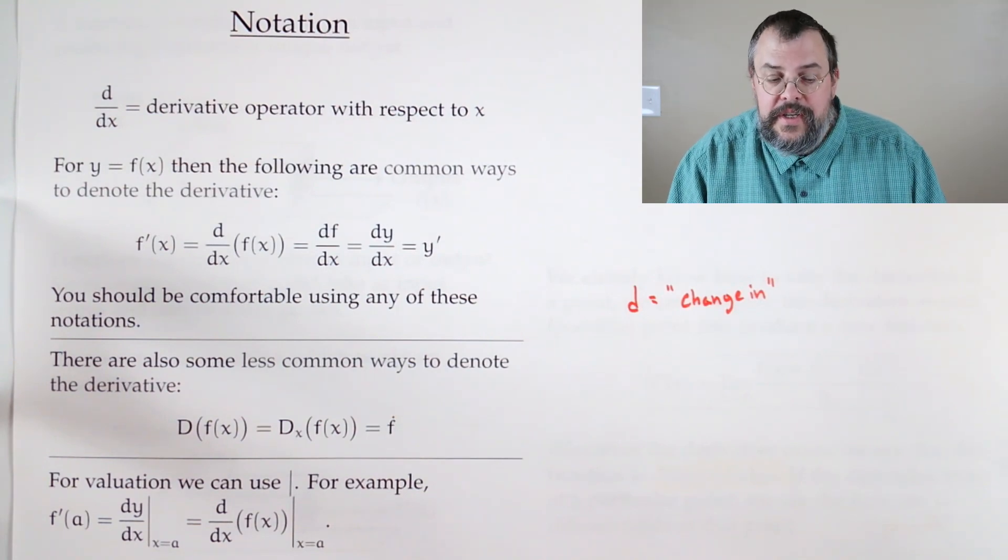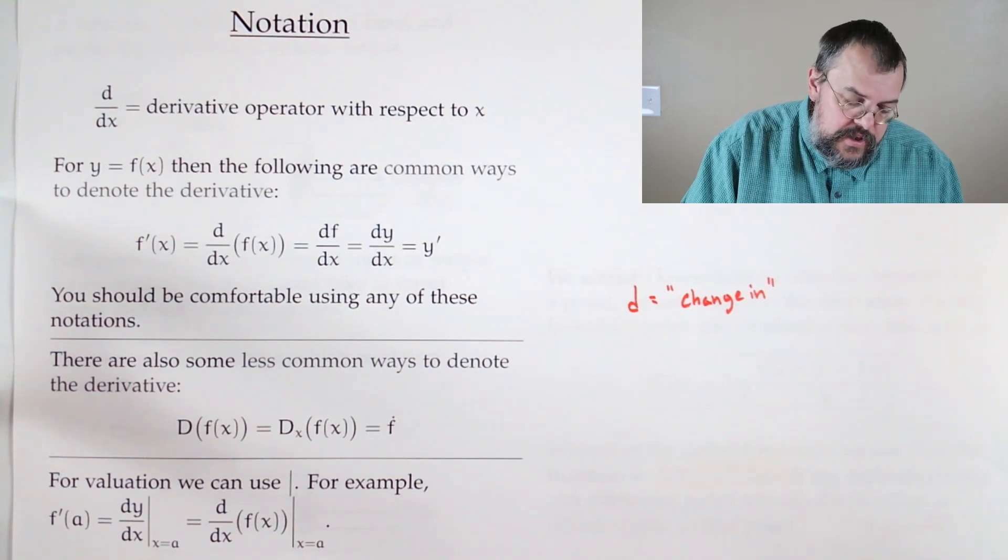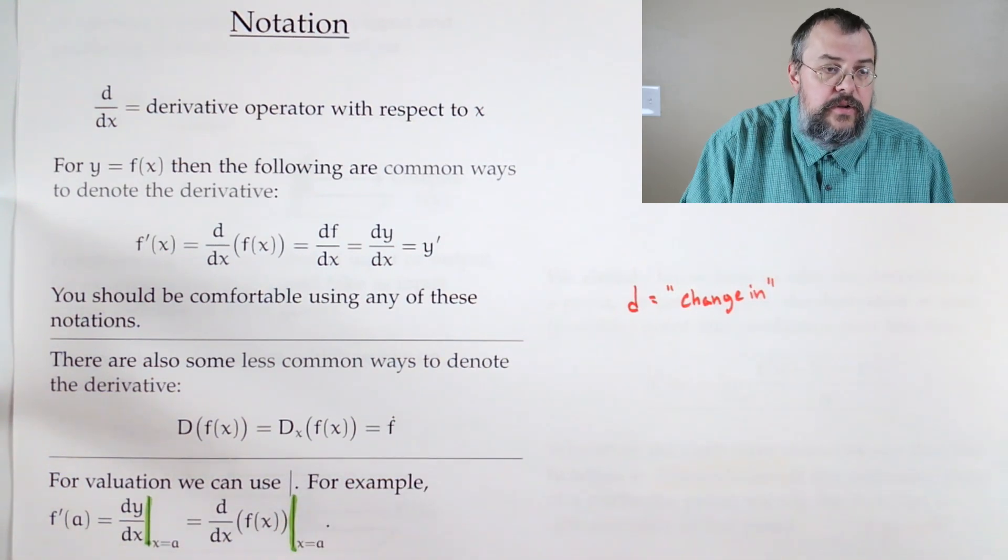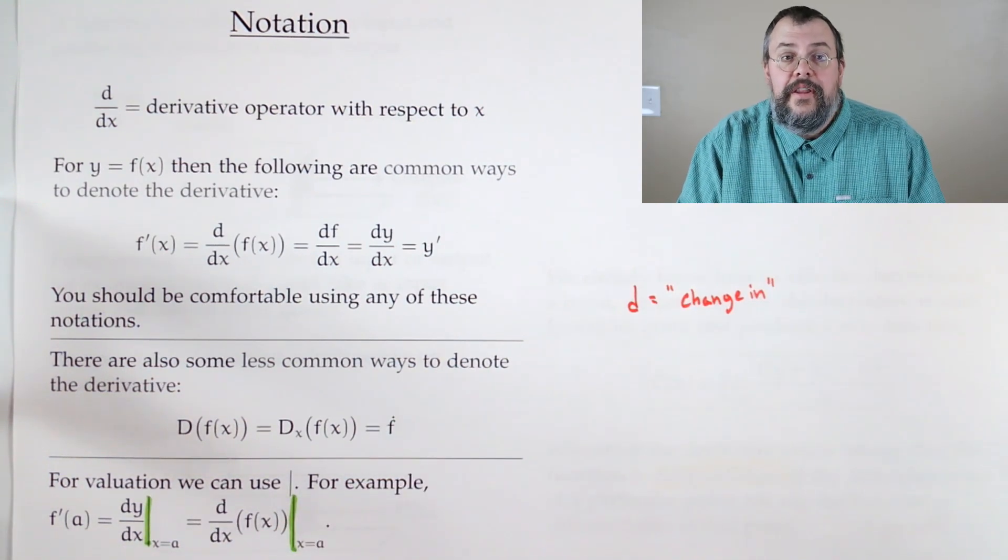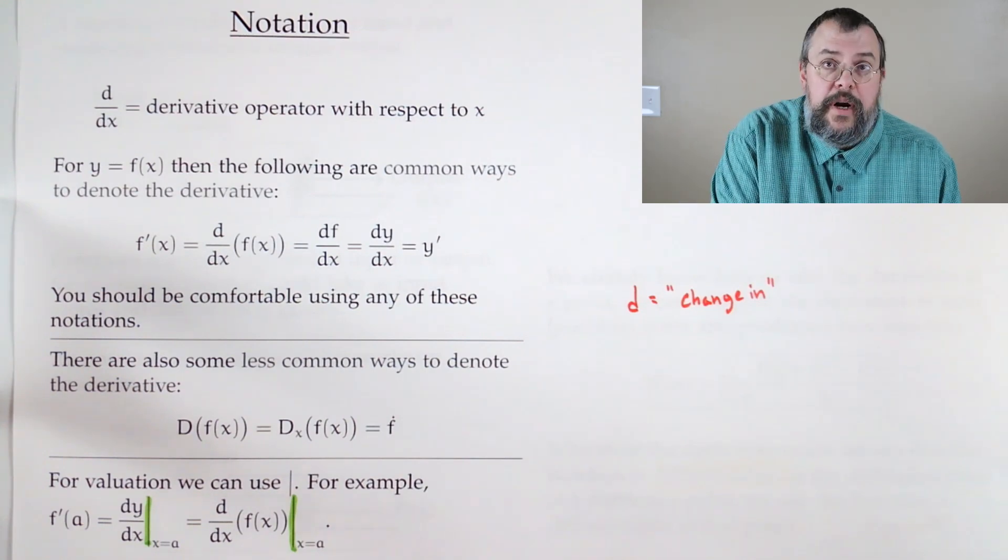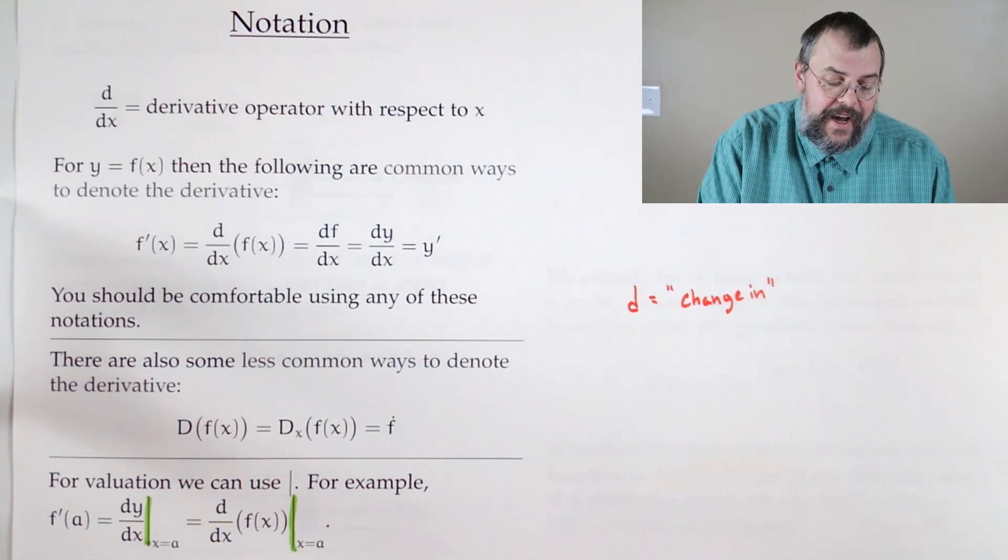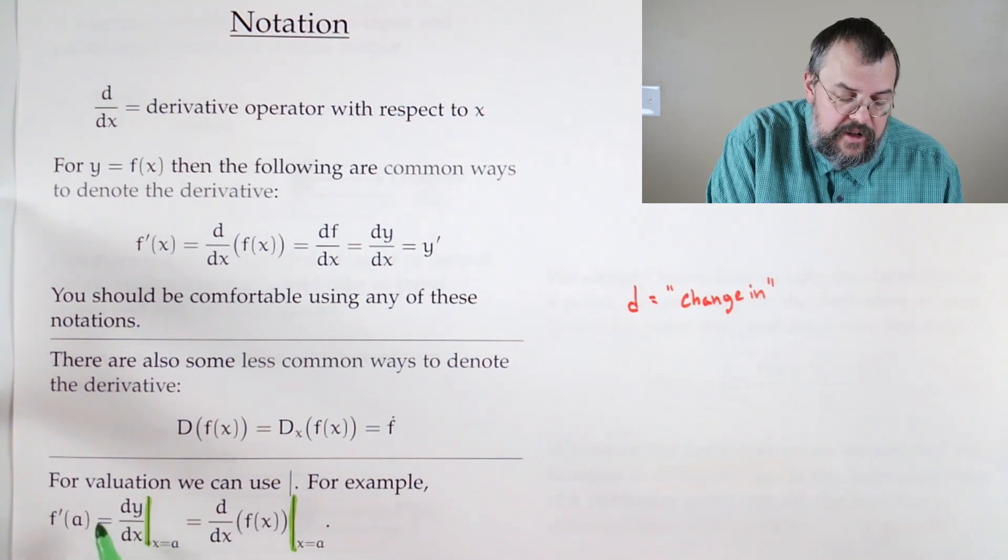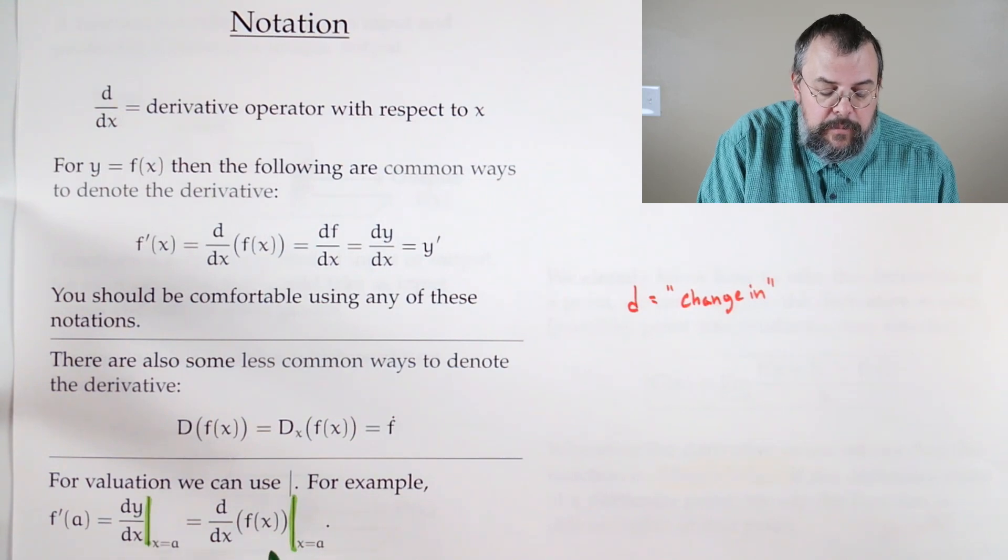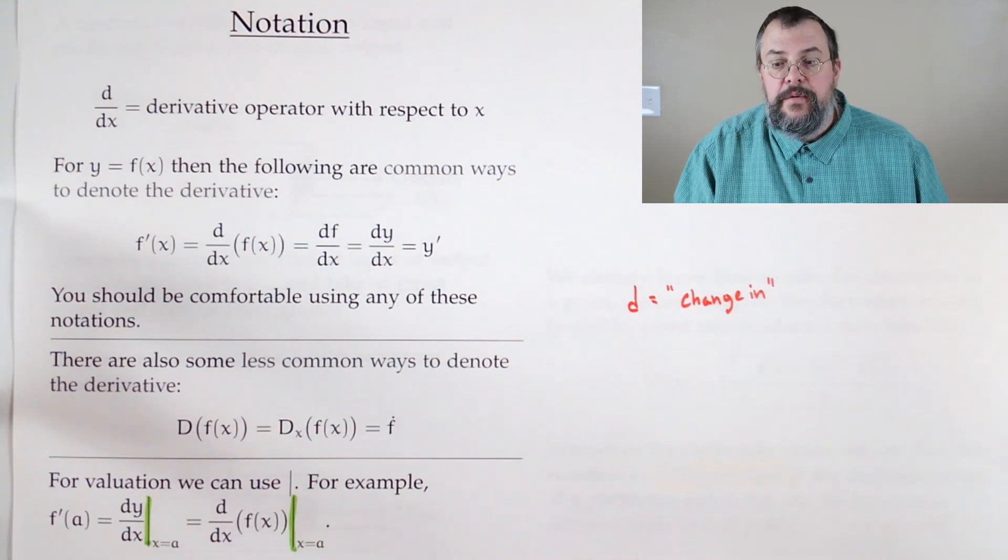Now, some other notation. You'll see here that we have these bars. Vertical bars. So whenever you see a big vertical bar, that says, I need to do an evaluation. There's some value here, and I need to figure out what it is. So if I want to say f prime of a, well, that's the derivative at a. Okay. I can also denote that by saying, take dy dx evaluated at x equals a, or plug f of x into the derivative operator. So in other words, take the derivative and then evaluate at x equals a.